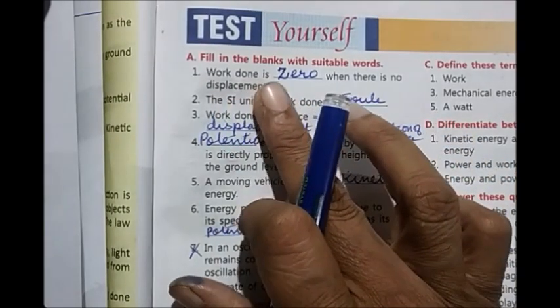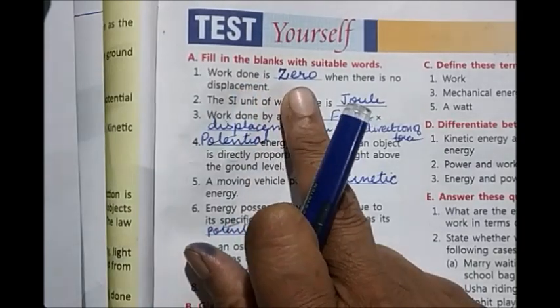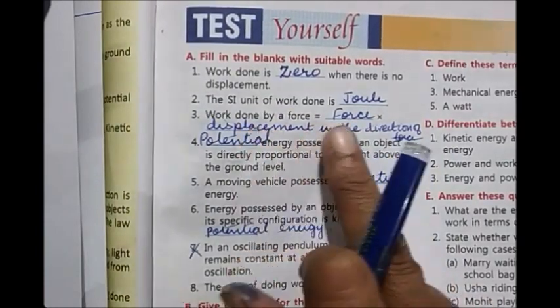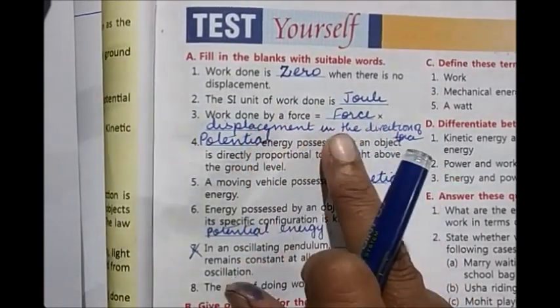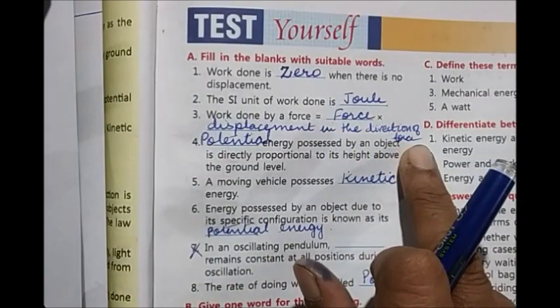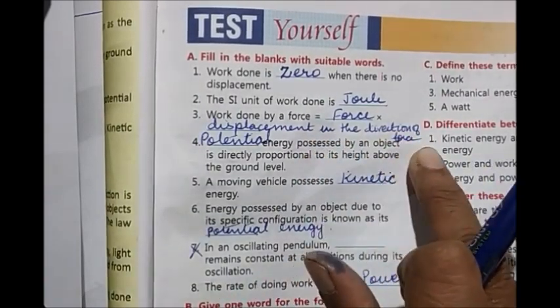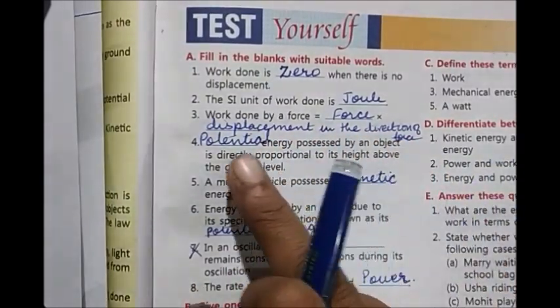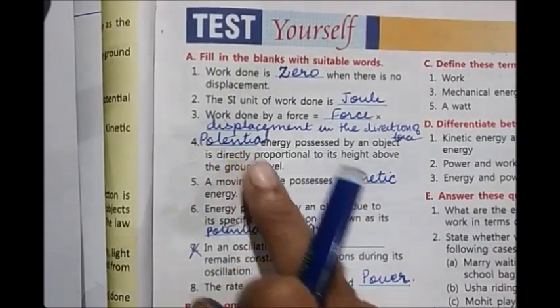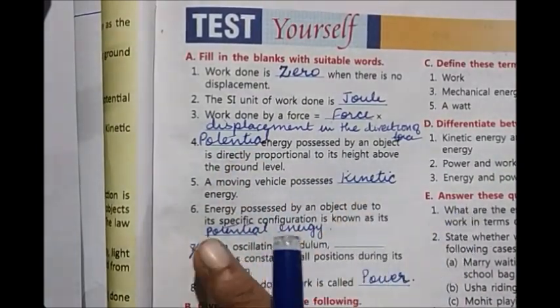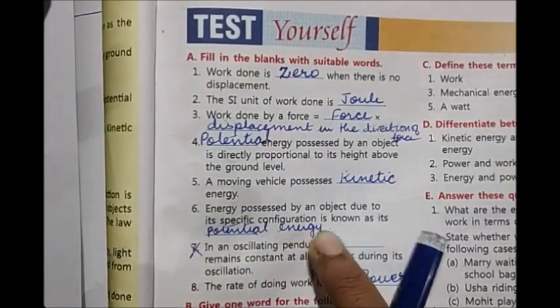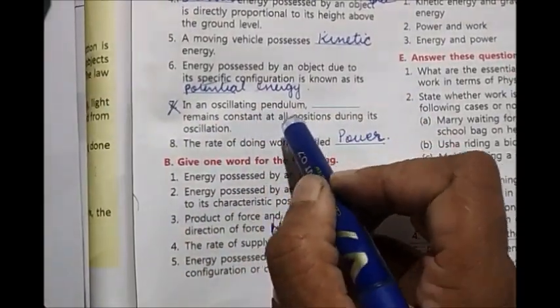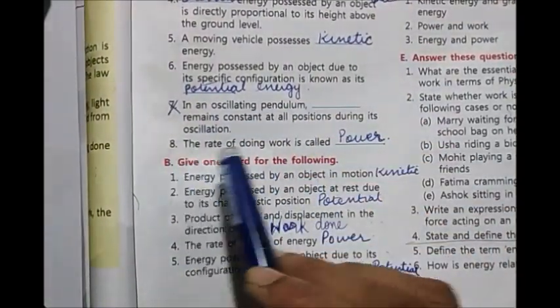We'll start with fill in the blanks. First one, work done is zero. Second one, joule. Third one, force into displacement in the direction of force. Fourth one, potential. Fifth one, kinetic. Sixth one, again potential energy. Seventh, you can just cut it off, oscillating pendulum we didn't do. Eighth one, power.